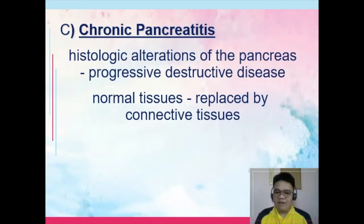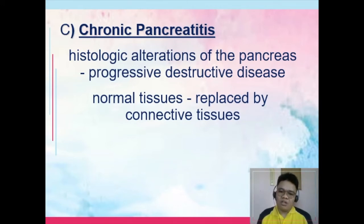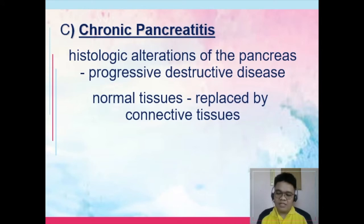The third type is chronic pancreatitis, in which there are already histologic alterations of the pancreas, making it a progressive destructive disease. In this type, normal tissues are already replaced by connective tissues. Chronic pancreatitis leads to histologic alterations — meaning the cellular structure of the pancreas is already changing due to chronic irritation and exposure to substances.